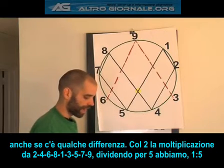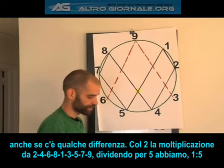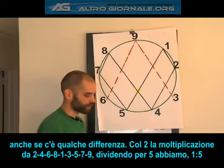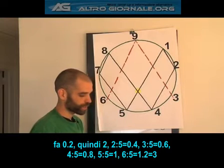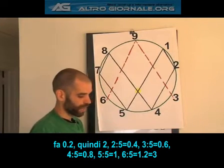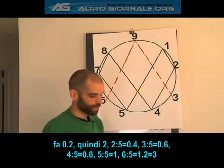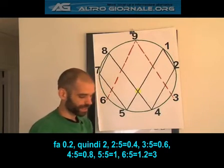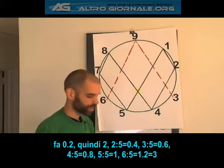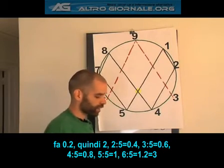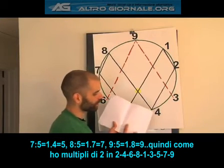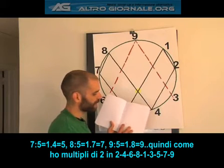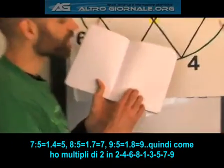So dividing by 5: 1 divided by 5 is 0.2, which is 2. 2 divided by 5 is 0.4, which is 4. 3 divided by 5 is 0.6, which is 6. 4 divided by 5 is 0.8, which is 8. 5 divided by 5 is 1, of course. 6 divided by 5 is 1.2, which equals 3. 7 divided by 5 is 1.4, which equals 5. 8 divided by 5 is 1.6, which equals 7. 9 divided by 5 is 1.8, which equals 9.